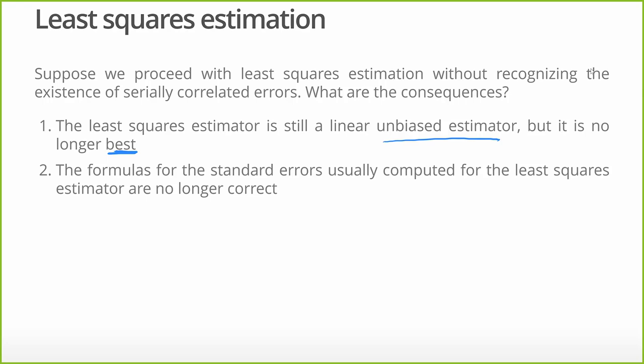It's still an unbiased estimator though, just not going to be the best unbiased estimator. And finally, the standard errors, they're just wrong. So we have to use a proper heteroskedasticity autocorrelation consistent formulation for the standard errors. Those robust standard errors in the presence of serial correlation, look at the previous lecture and we talk about how to do that.